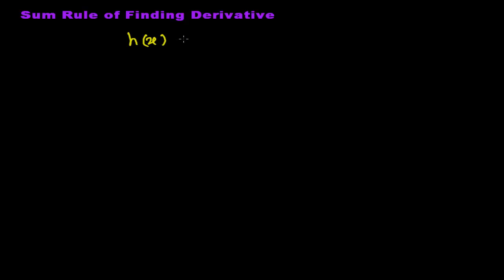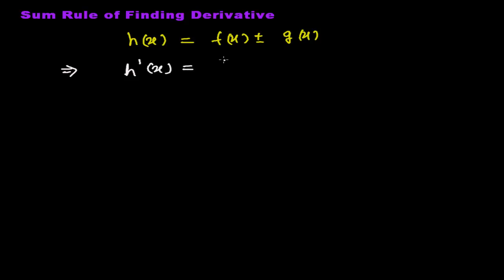Simply, if you have a function h(x) equal to f(x) plus or minus g(x) — both plus and minus are possible — so if two functions f(x) and g(x) are added or subtracted, giving another function h(x), then h(x) is the sum or difference of the two functions. Now we need to find the derivative of h(x). The derivative of h(x) equals the derivative of f(x) plus or minus the derivative of g(x).